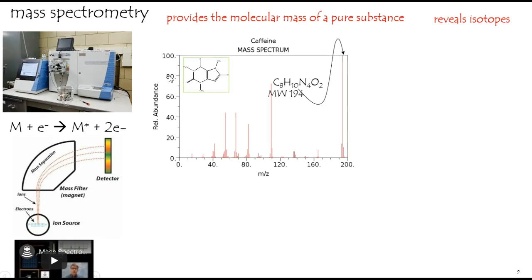Here's the mass spectrum of caffeine. There's the structure. It has a molecular weight of 194 and bada bing, you get a molecular ion of around 194. Isn't that nice? Let's ignore all these fragmentation patterns. Most people do nowadays.